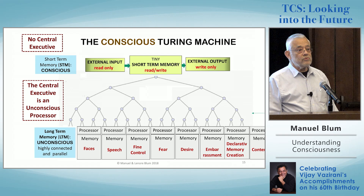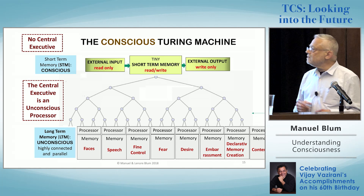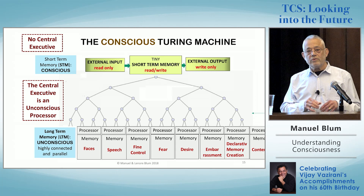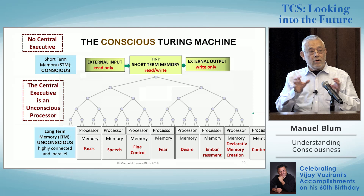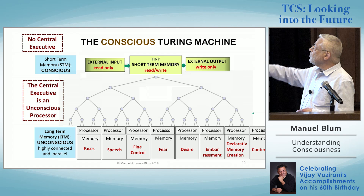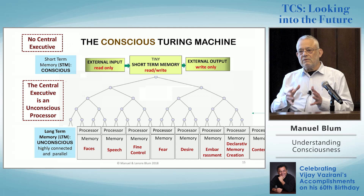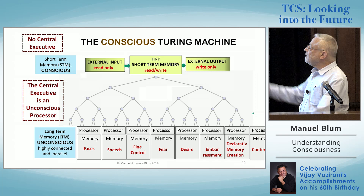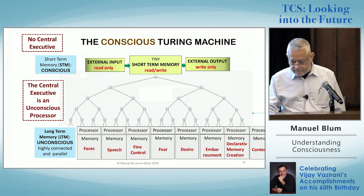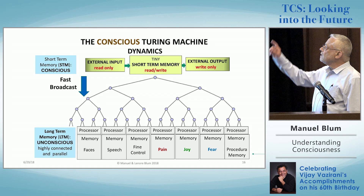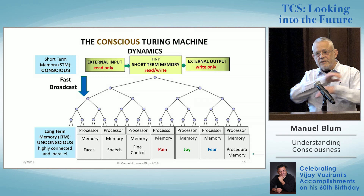There's no central executive. The central executive — that finite state part — in this model is simply taken up by one of these processors. There's a processor concerned with generally how we got where we are, and another concerned with orchestrating what goes on on the stage. When a processor gets up on the stage, it is dealing with what's there and is the stage manager while it's up there, until it's overtaken by another processor. The dynamics: you have a tiny short-term memory, and whatever is there is broadcast to all of the unconscious processors at the bottom.